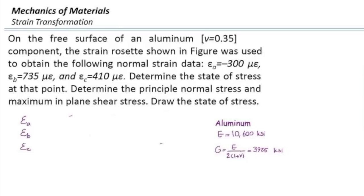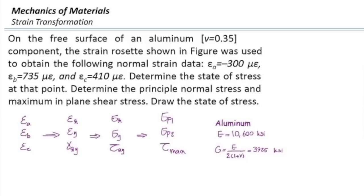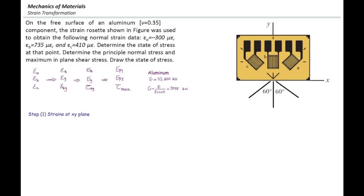To solve this problem, we have εa, εb, and εc. We need to convert them into εx, εy, and γxy using the strain transformation equation. Then, using the generalized Hooke's law, we need to determine stresses and then determine the principal stresses. Those are the steps we need to take.